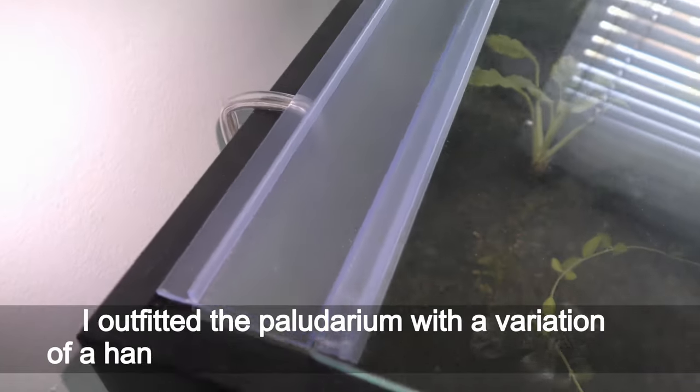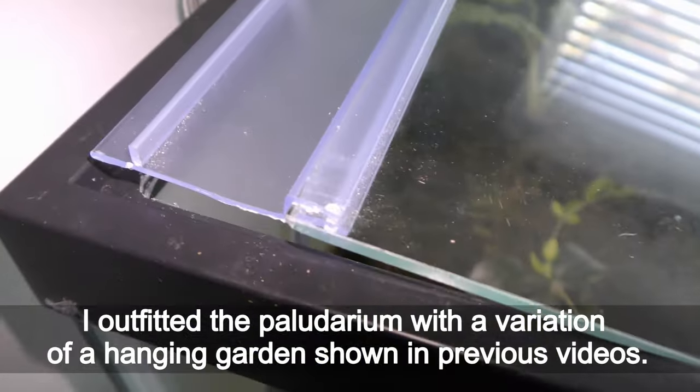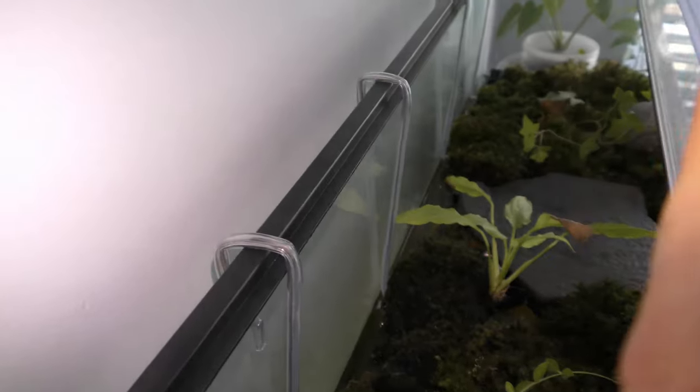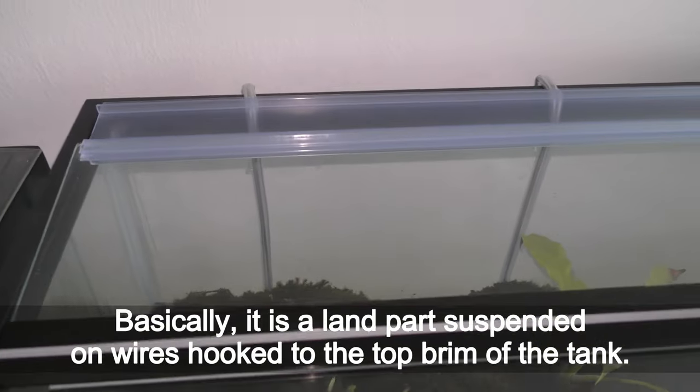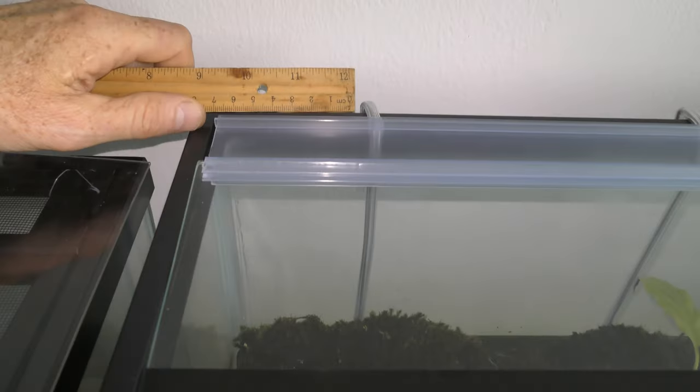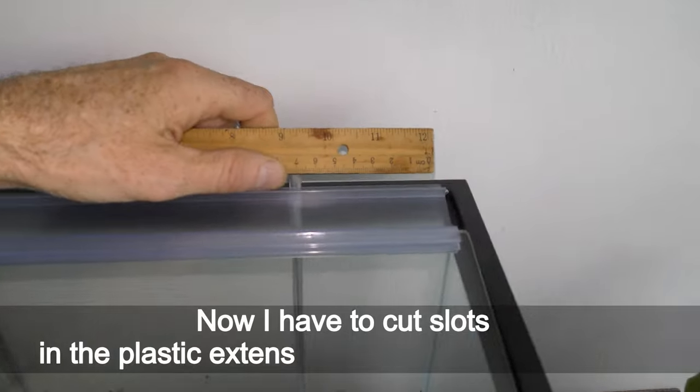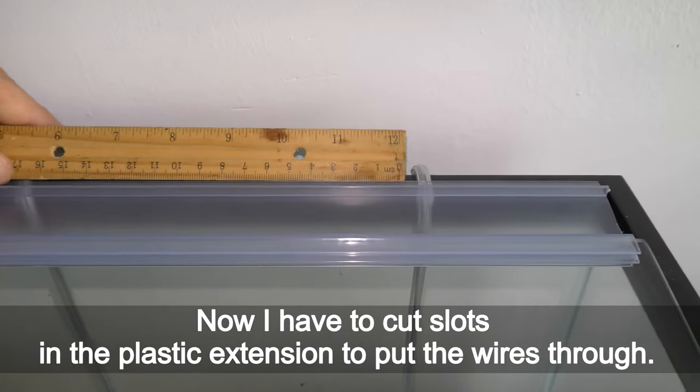I outfitted the paludarium with a variation of hanging garden shown in previous videos. Basically, it is a land part suspended on wires hooked to the top brim of the tank. Now I have to cut slots in the plastic extension to put the wires through.